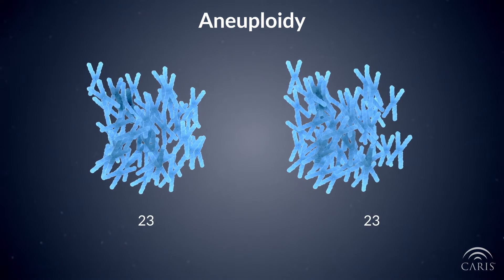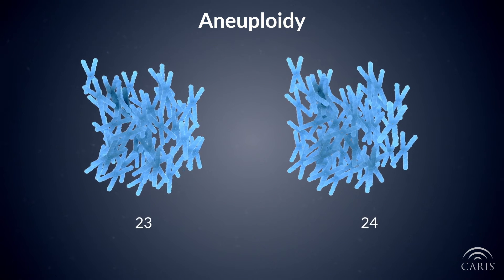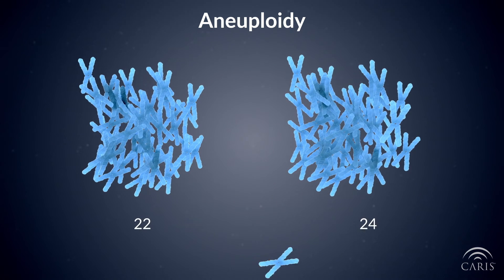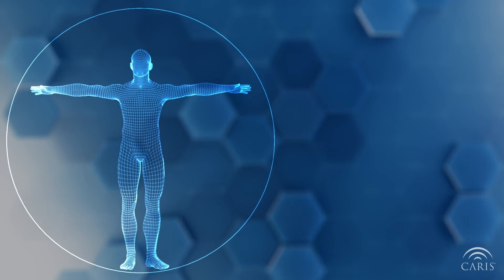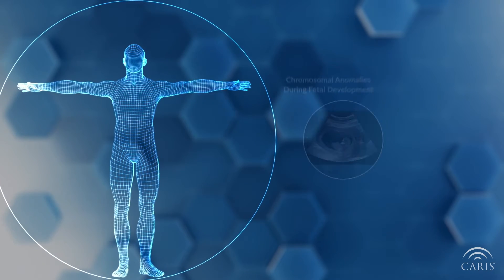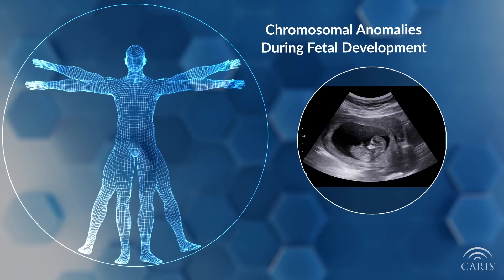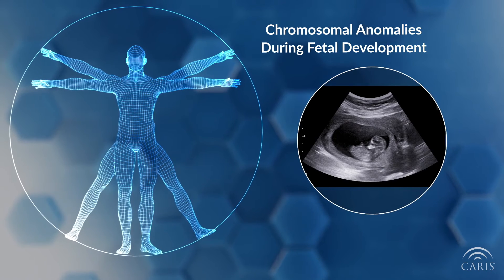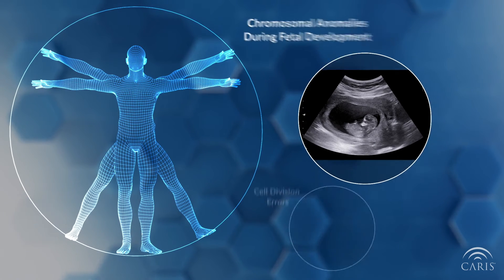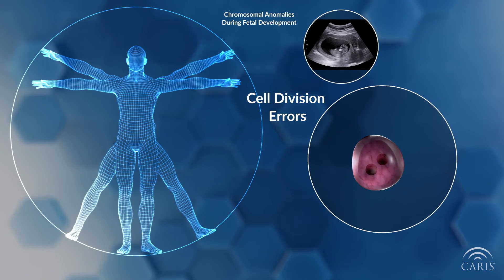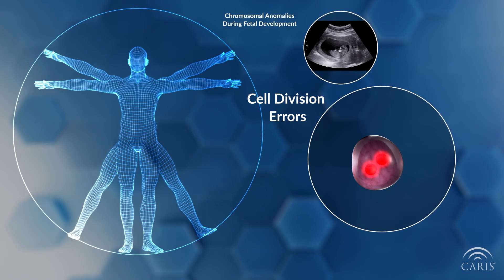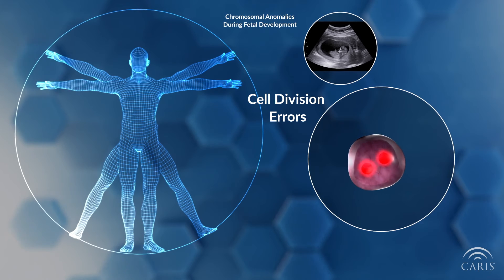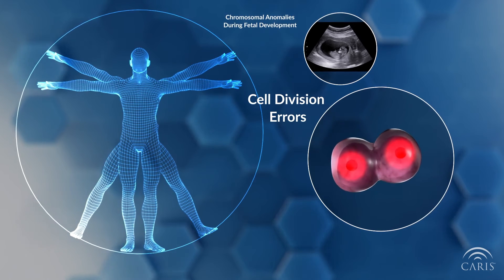Aneuploidy usually refers to the addition or deletion of one full chromosome. Sometimes, aneuploidy happens during fetal development, resulting in chromosomal anomalies. Other times, aneuploidy happens spontaneously, when cells erroneously copy their genetic code as they prepare to divide, or when chromosomes are incorrectly separated into daughter cells.